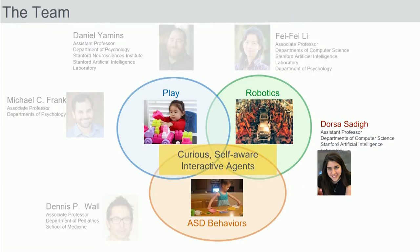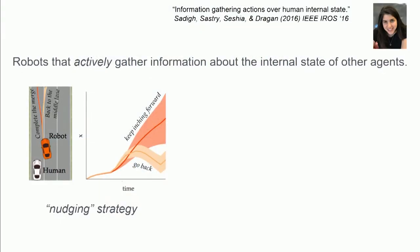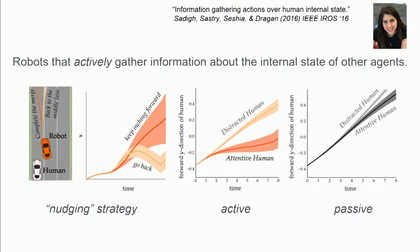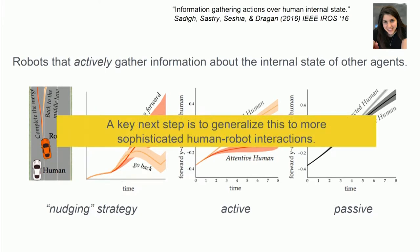Moving into Dorsa's group, what she's found is really interesting and complementary. If you are an autonomous robot that wants to cut in front of another car, you shouldn't just do it — you should nudge first. By nudging, you find out the state of mind of the other driver: are they attentive or not? By separating the distracted human from the attentive human, you not only have a model of their internal state, which is critical to understanding what they'll do, but you're also much better at making plans compared to agents using a passive information-gathering strategy. The next step is to generalize this to more sophisticated human-robot interactions.